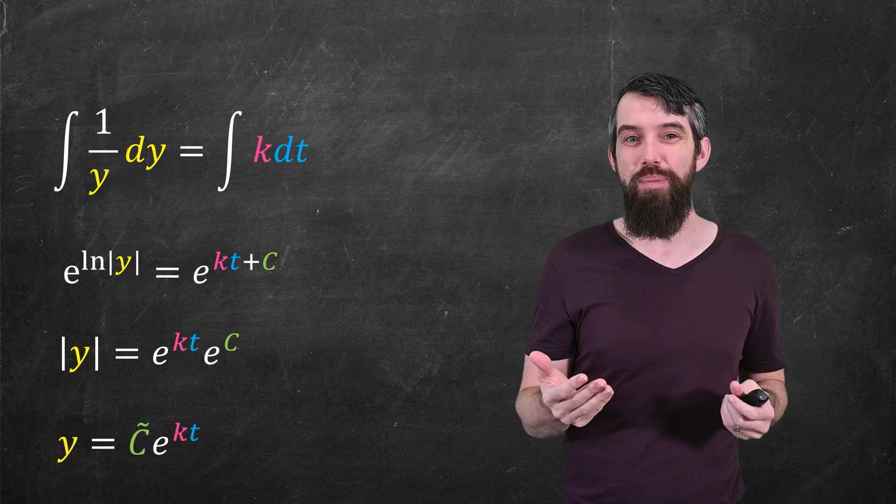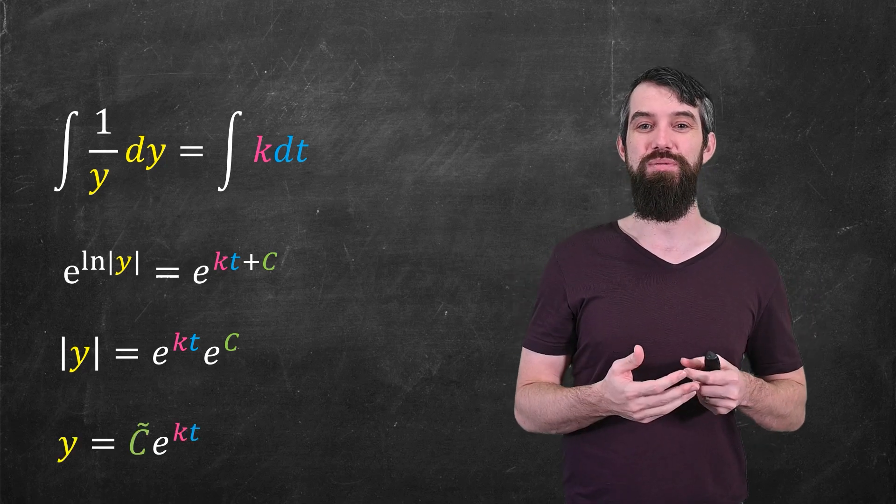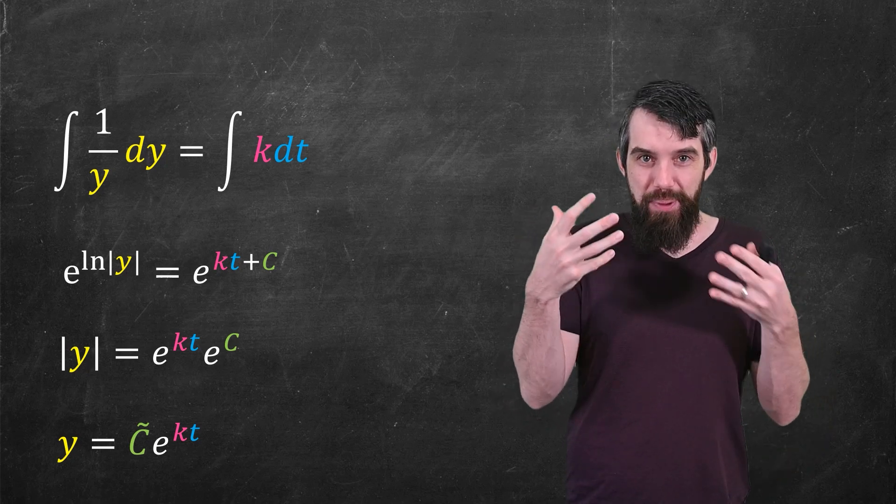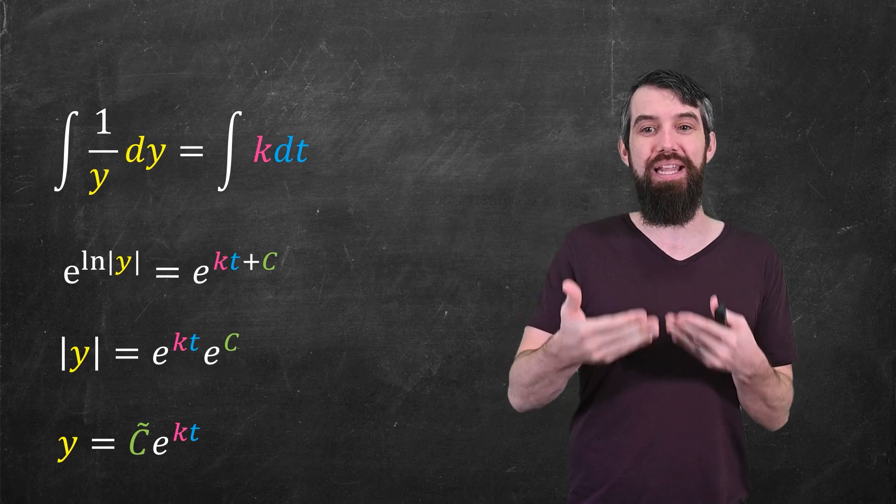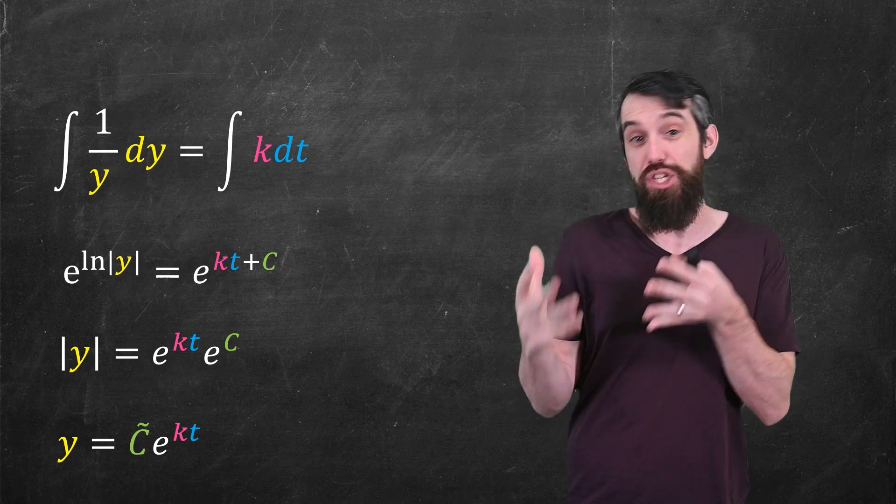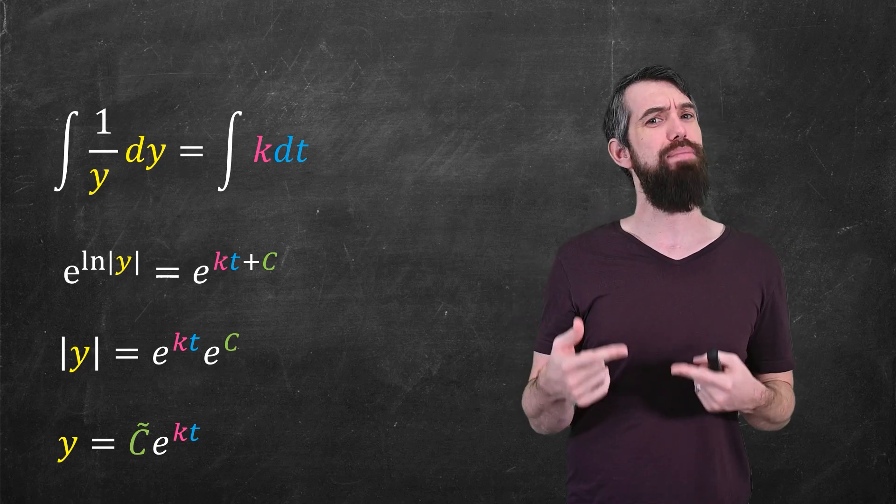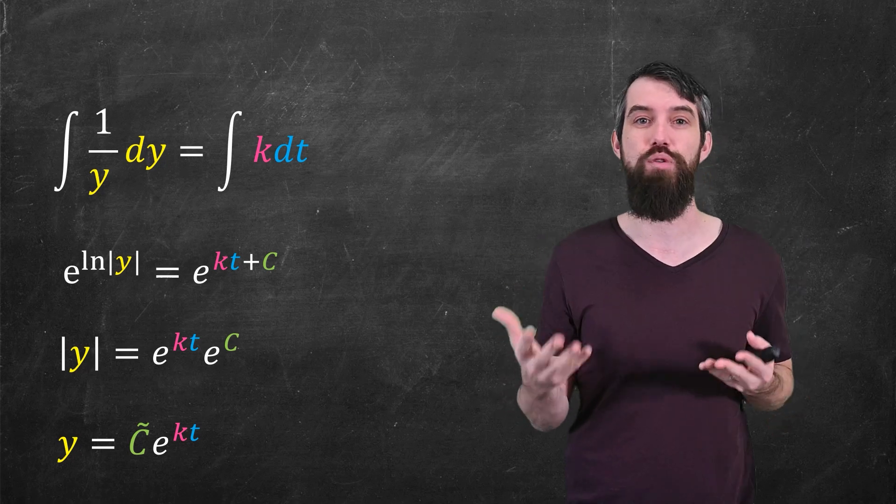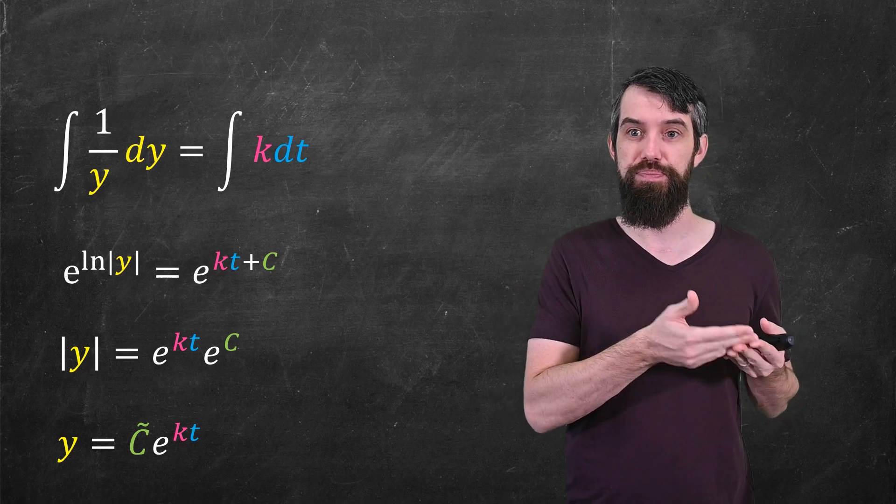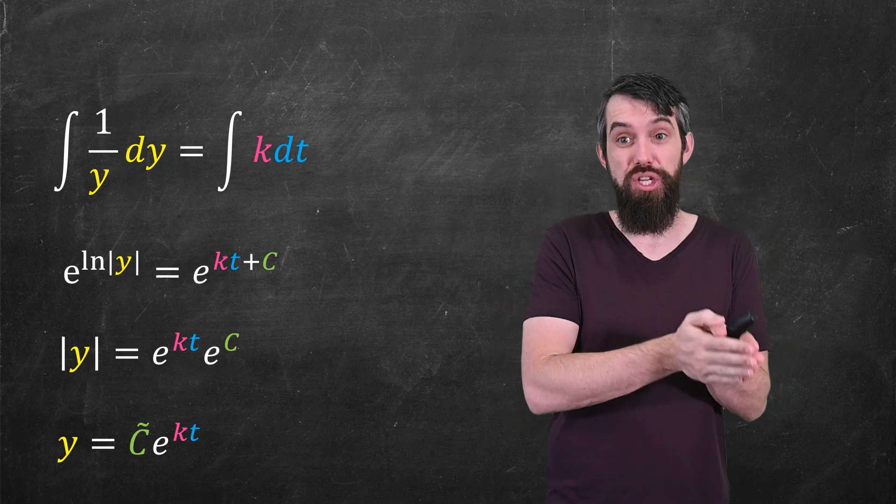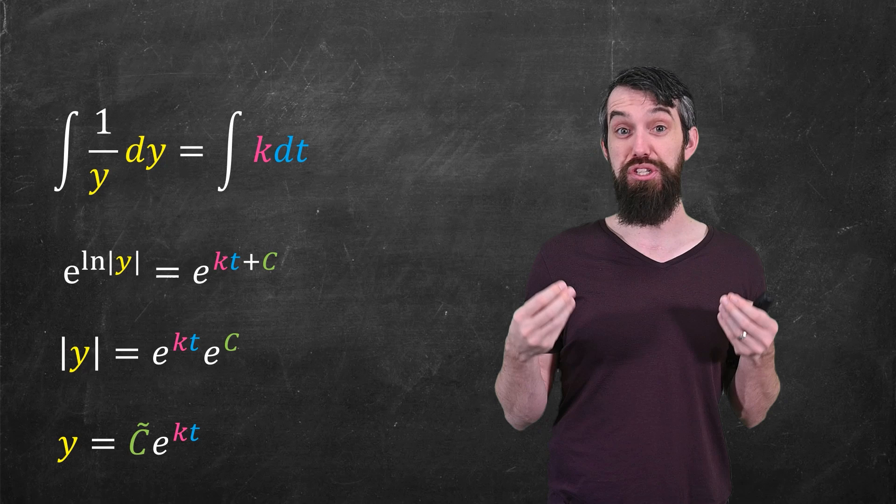e to the kt plus c, when you add up in the exponents, that's just the same thing as multiplying by e to the c. So I'm going to relabel e to the c as c tilde. Basically, my additive constant up in the exponent has now become a multiplicative constant. I also have dropped the absolute value signs because exponential is always positive. And so now we've gotten the same solution that I've asserted to you previously by this method of separation of variables.